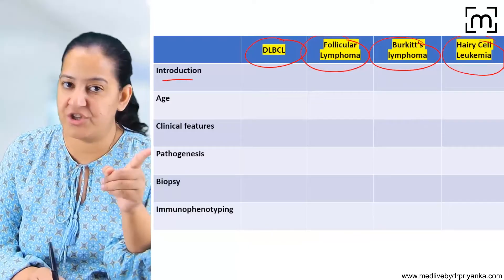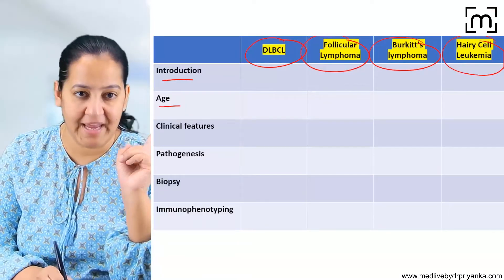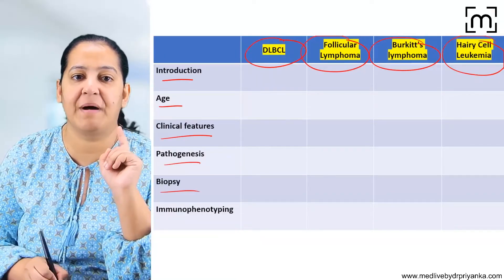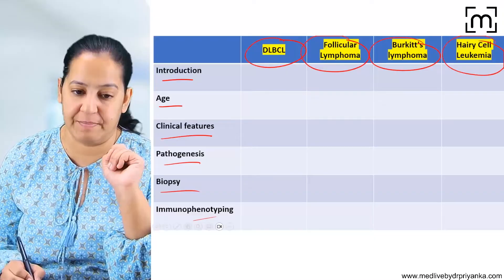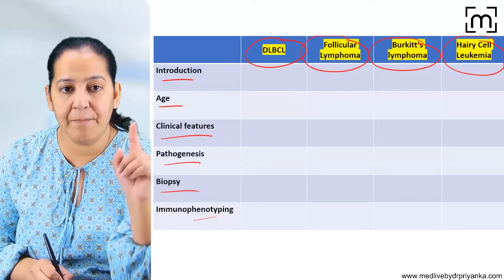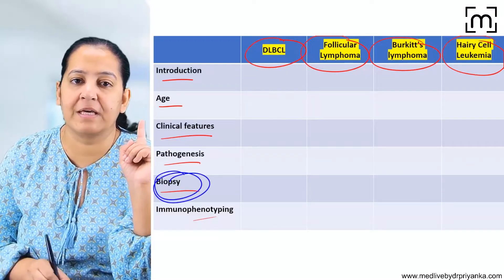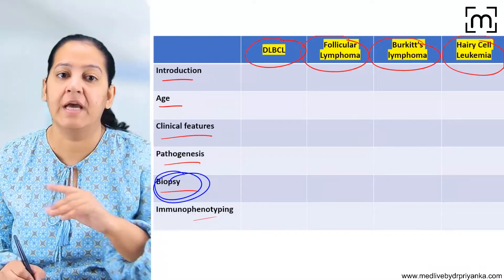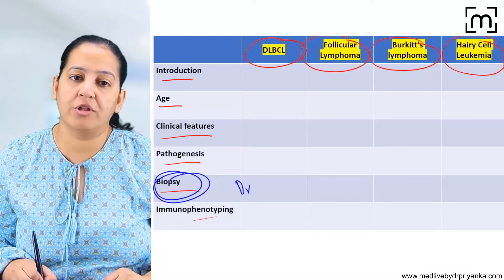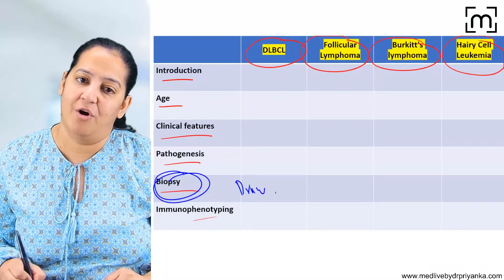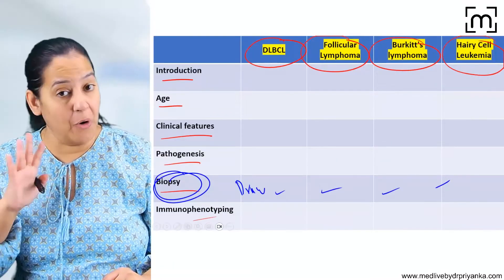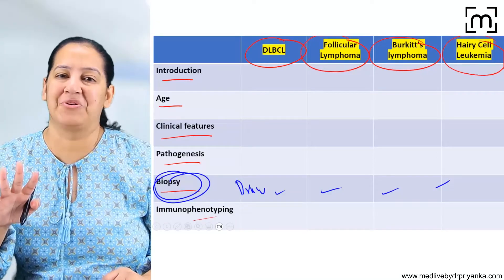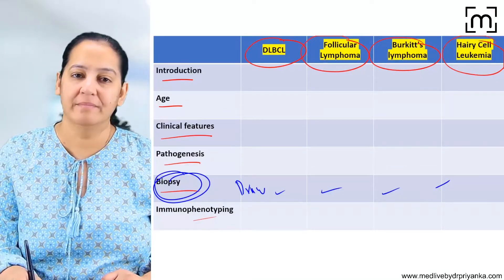For each lymphoma, I will cover the introduction, age group of presentation, clinical features, pathogenesis, biopsy, and immunophenotyping. The most important is the biopsy — usually short notes or very short notes come on the biopsy, and you have to be able to draw the biopsy for all of them. I will explain how to draw it. Let us start with the first one — DLBCL.